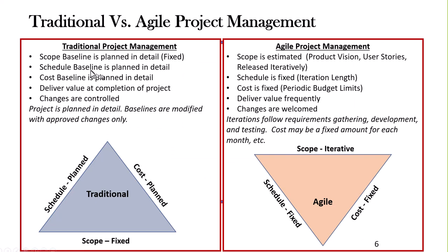In a traditional project, we have what's called the iron triangle or triple constraint — this is a predictive type project. We have a scope that is fixed at the bottom of that triangle. When that scope is fixed and we make a change to it, we're going to probably change the schedule and the cost. The iron triangle says: if I make a change to one leg of this triangle, I will change at least one of the other legs, if not both.